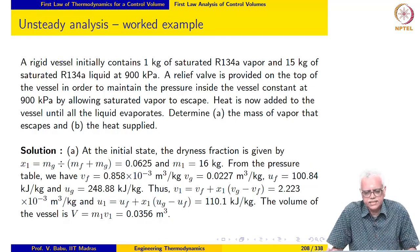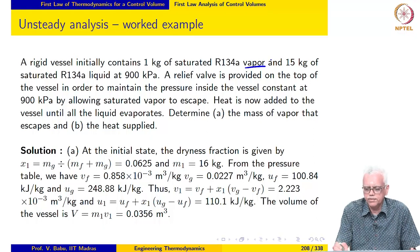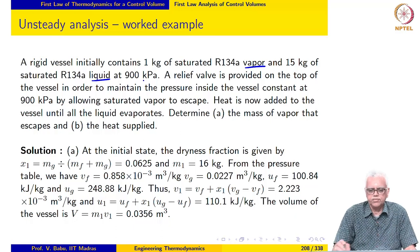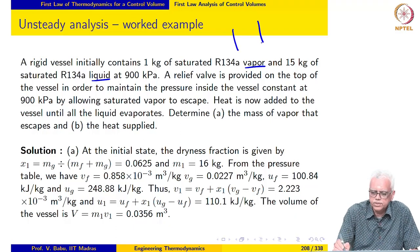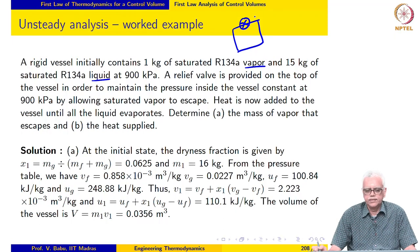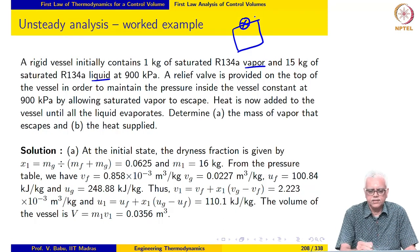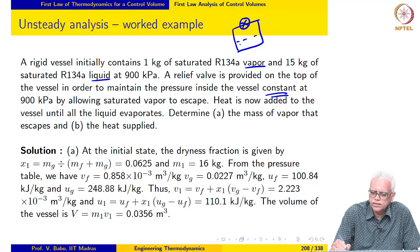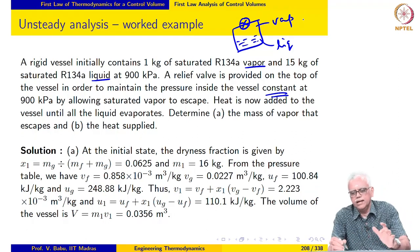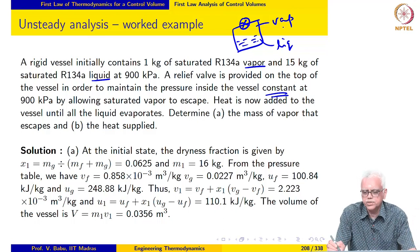A rigid vessel initially contains a certain amount of saturated R134a vapor and a certain amount of saturated R134a liquid at a pressure of 900 kilopascal. There is a valve provided on top of the vessel, and the pressure inside the vessel is maintained constant by this valve. We have liquid here and saturated vapor here.